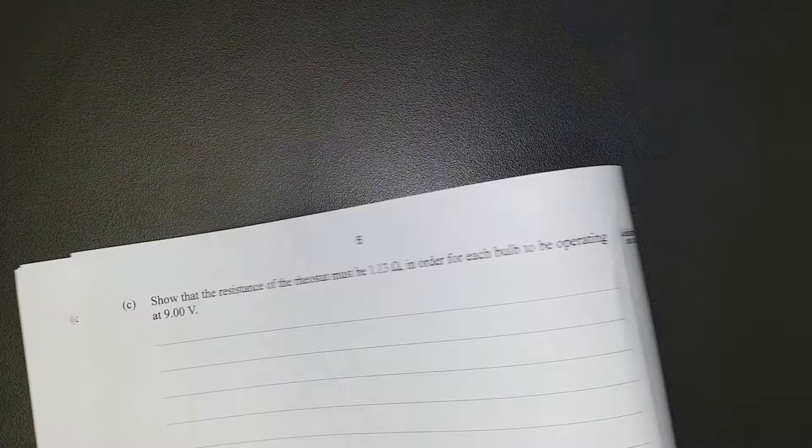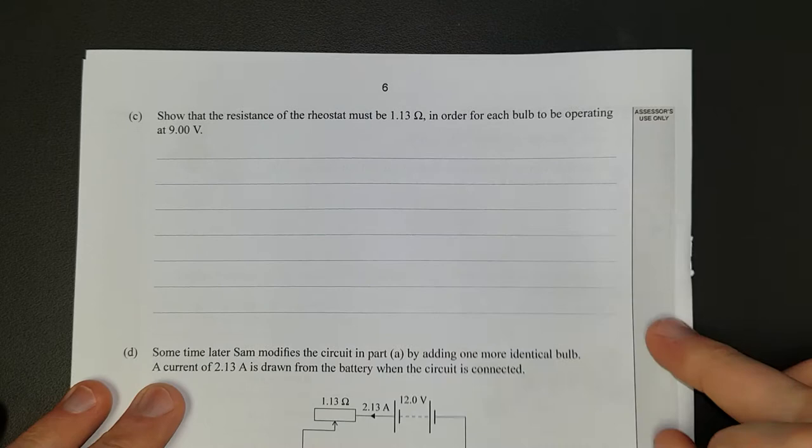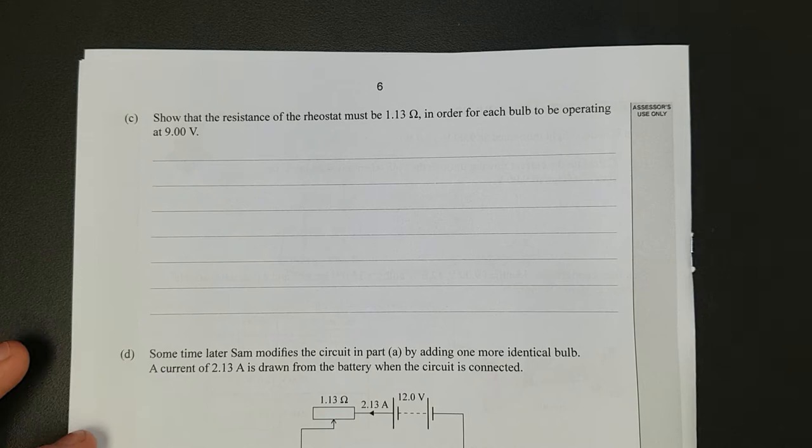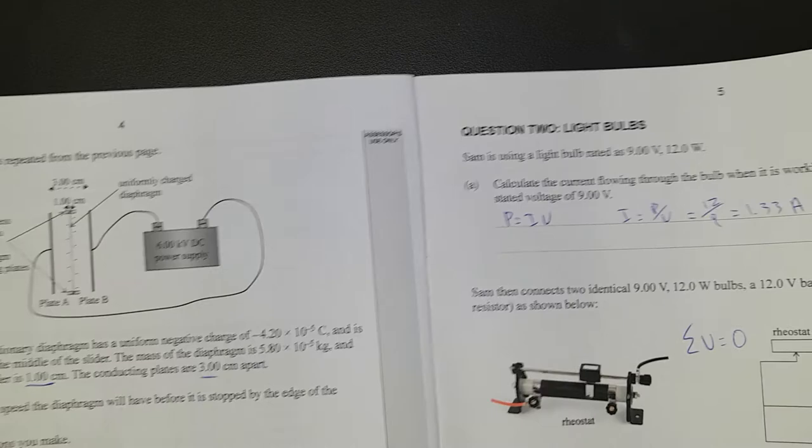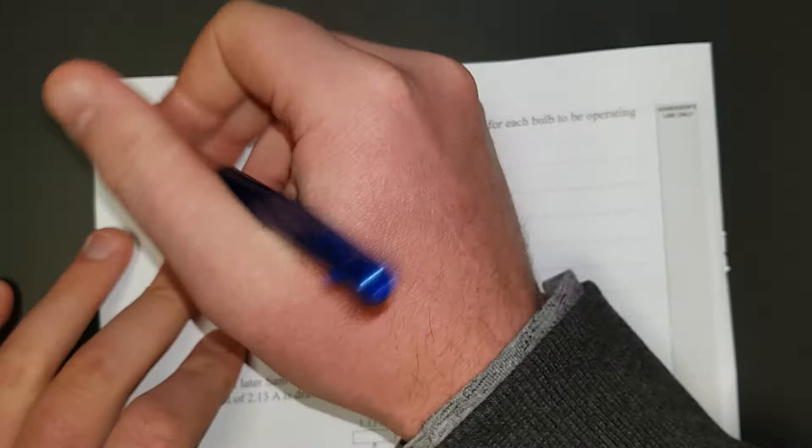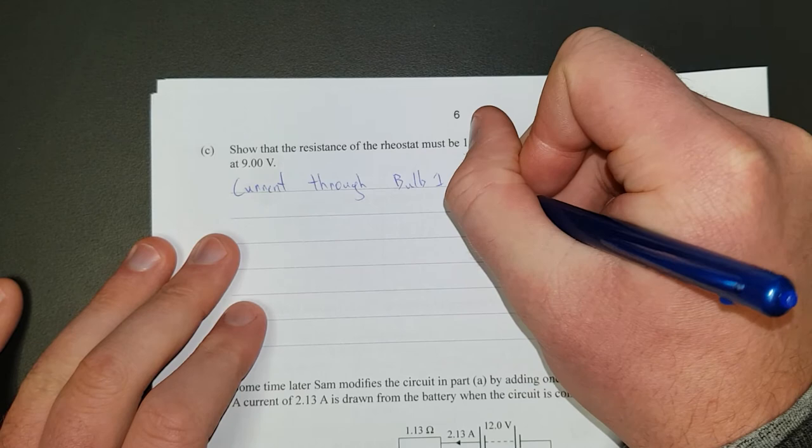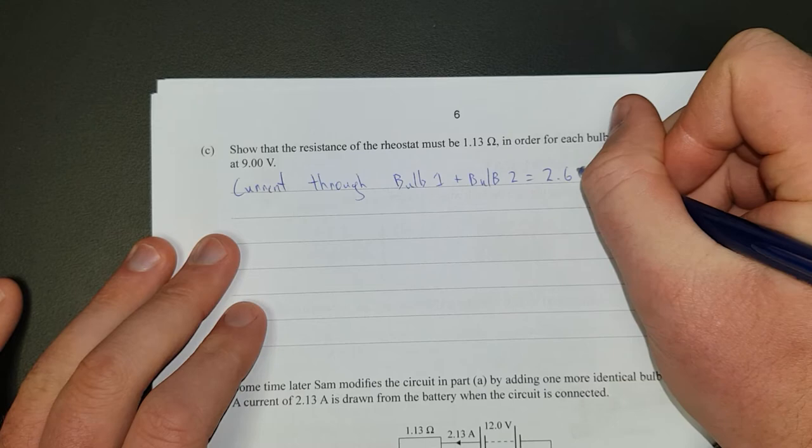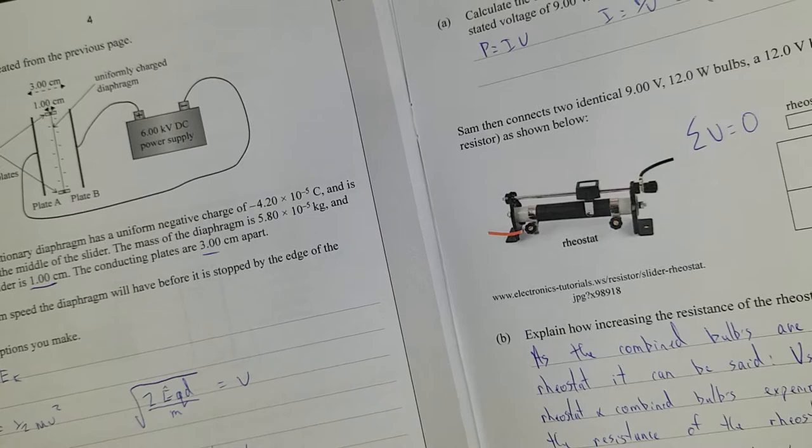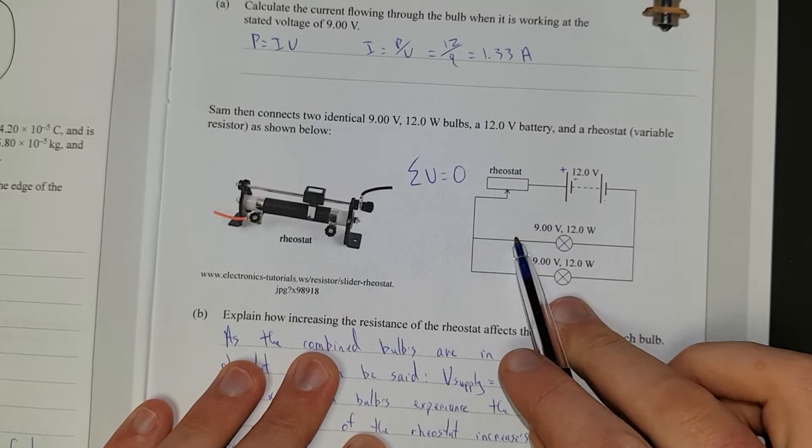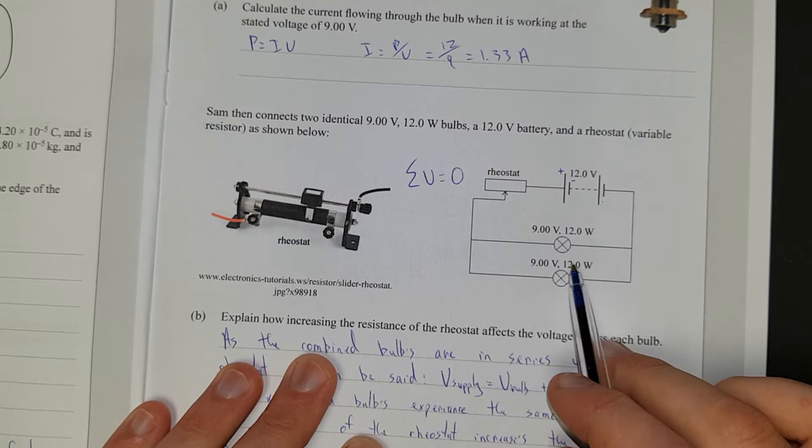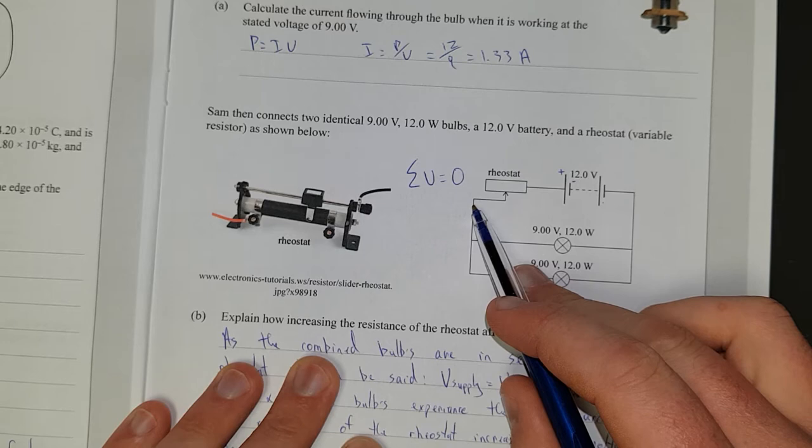Show that the resistance of the rheostat must be 1.13 ohms in order for each bulb to be operating at 9 volts. How are we going to do that? So we know the current going through one bulb over here is 1.33 amps. So let's write current through bulb 1 plus bulb 2 is equal to 2.66 amps. And the reason for that is just because current splits up. These are identical bulbs, so if there's 1.33 amps going through there, if you join it here at the node, there must have been 2.66 amps of current coming down this path from the positive, splitting up, rejoining back to the negative.